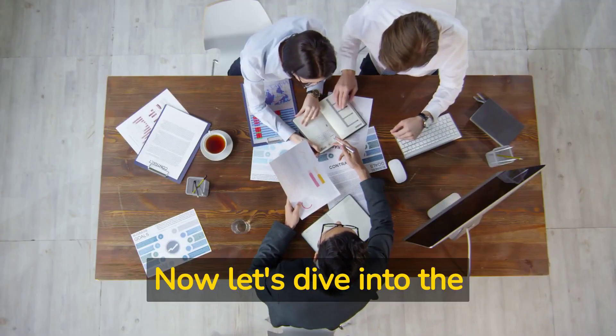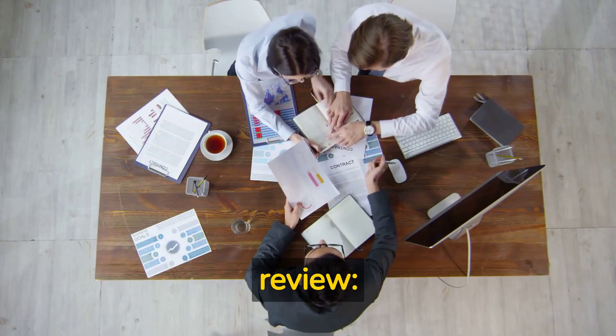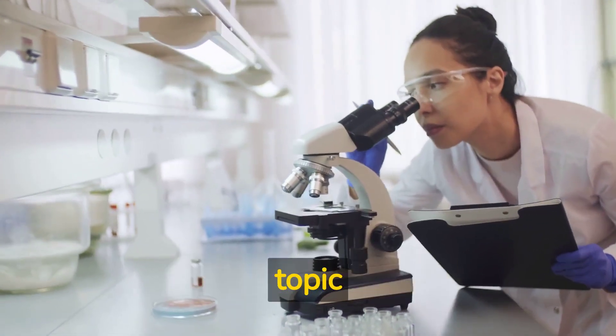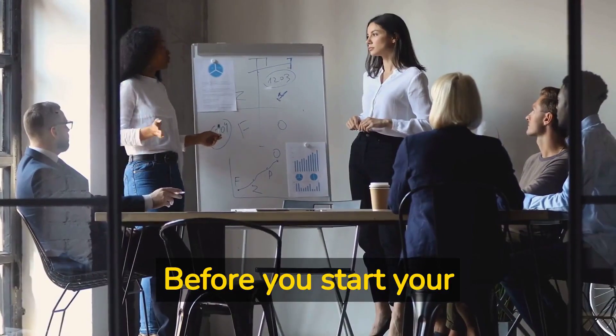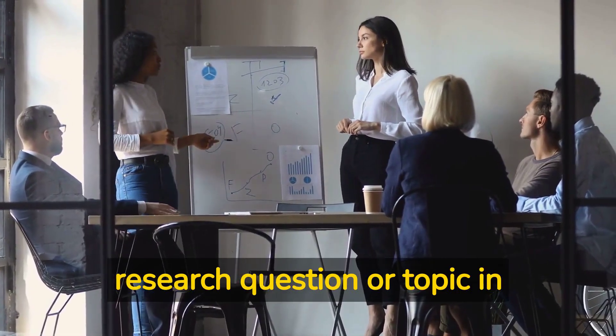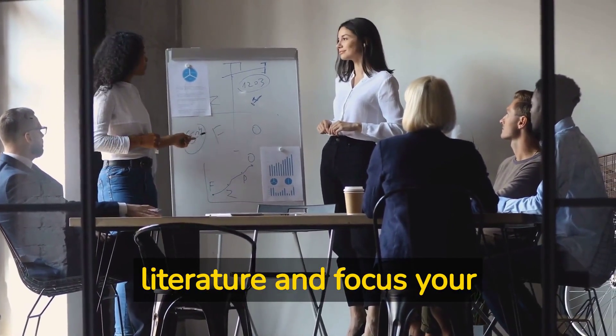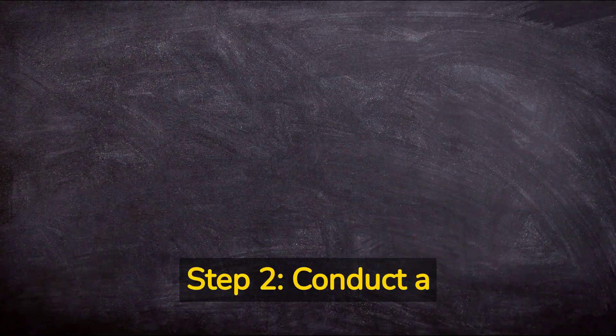Now let's dive into the steps for writing a literature review. Step 1: Define your research question or topic. Before you start your literature review, you need to have a clear research question or topic in mind. This will help you identify relevant literature and focus your review.